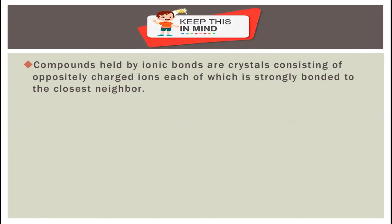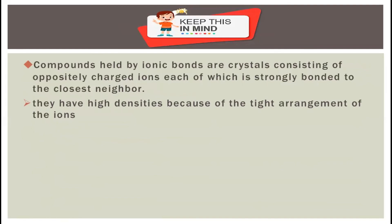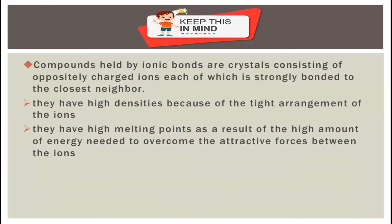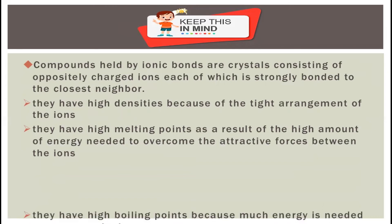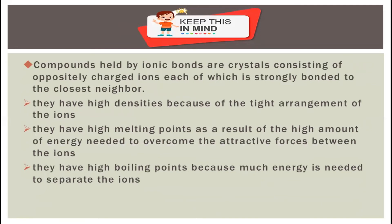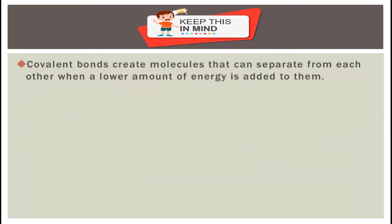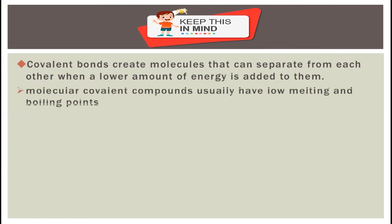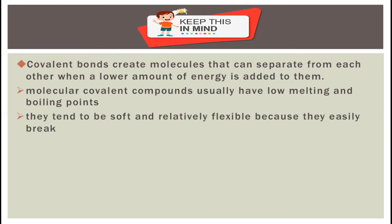Keep this in mind: compounds held by ionic bonds are crystals consisting of oppositely charged ions, each strongly bonded to its closest neighbor. They have high densities because of the tight arrangement of the ions. They have high melting points as a result of the high amount of energy needed to overcome the attractive forces between the ions. They have high boiling points because much energy is needed to separate the ions. Covalent bonds create molecules that can separate from each other when a lower amount of energy is added. Molecular covalent compounds usually have low melting and boiling points. They tend to be soft and relatively flexible, and are usually gases, liquids, and soft solids.